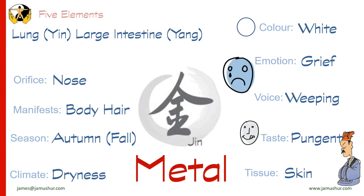The lungs dislike dryness, so modern living — people not opening windows, living in buildings with double or triple glazing and central heating — can cause disharmony in the lungs, usually resulting in symptoms like dry cough. The qi of the metal element is most prominent in autumn or fall, which is the time of harvesting the abundance of summer.